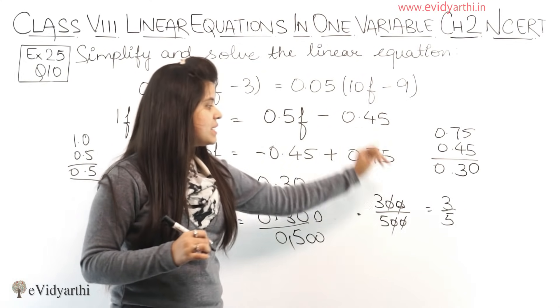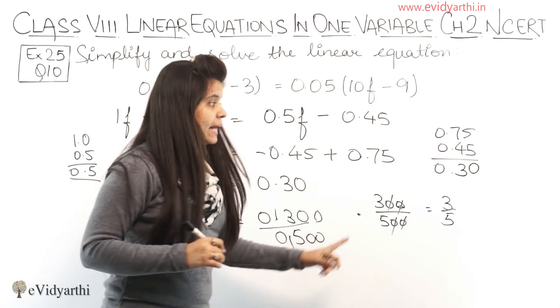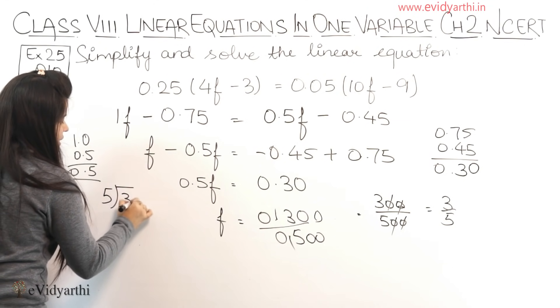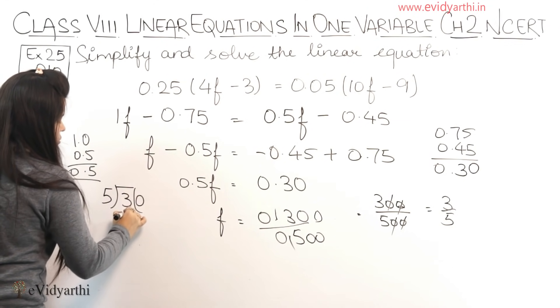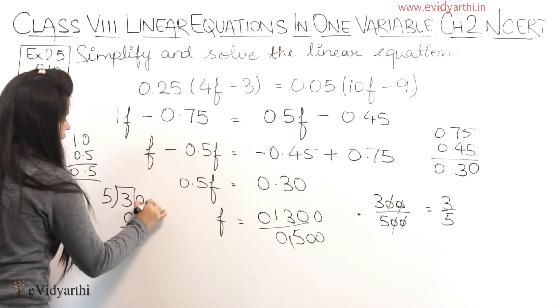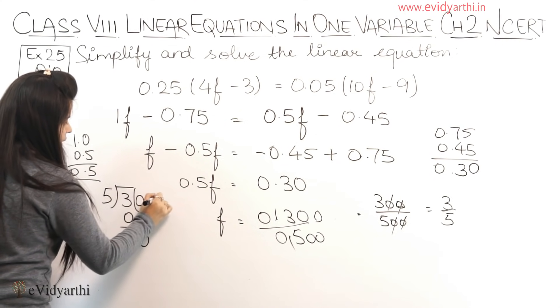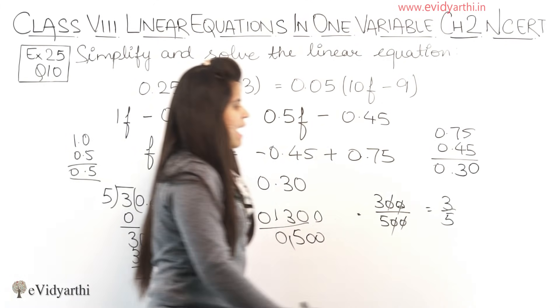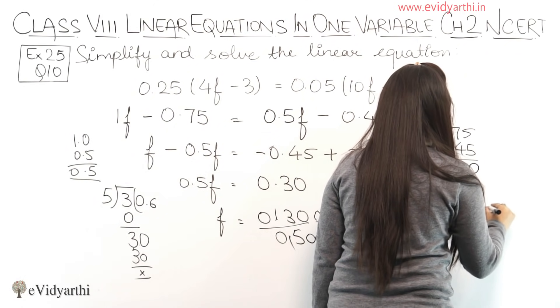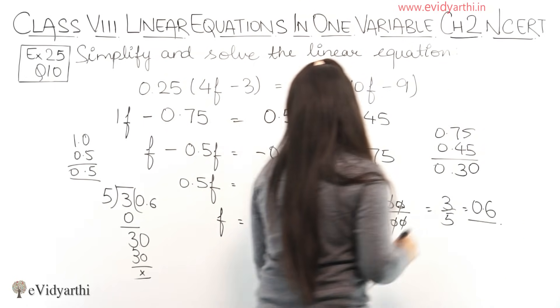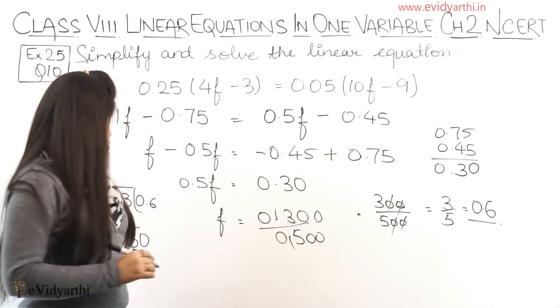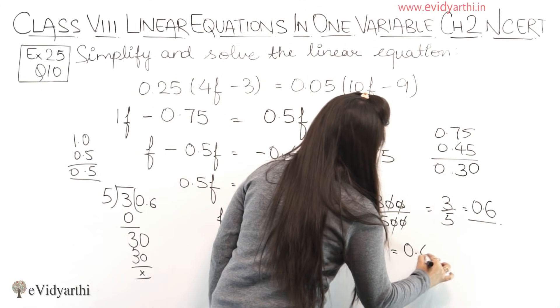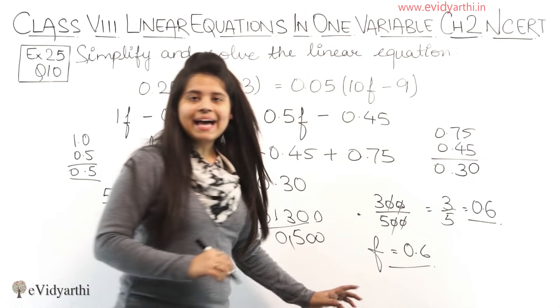Since everything was in decimal, we have to show this in decimal also. So divide 3 by 5: 5 into 0 is 0. We will get 3 point, this will become 30, and 5 sixes are 30. So we have the answer as 0.6. In this, f equals to 0.6. This is the answer.